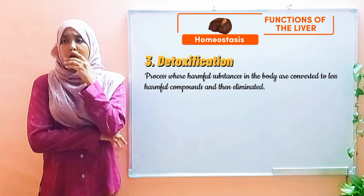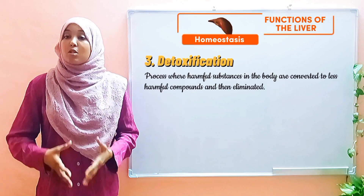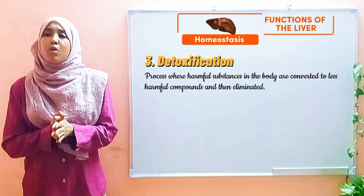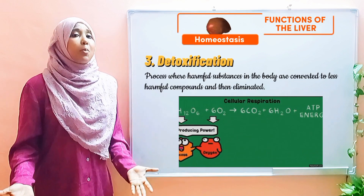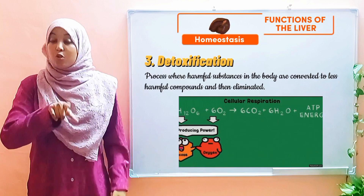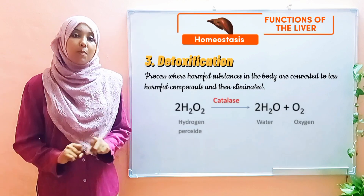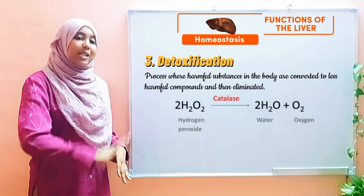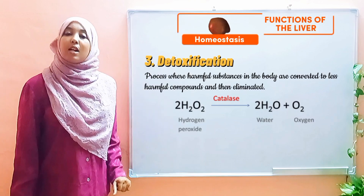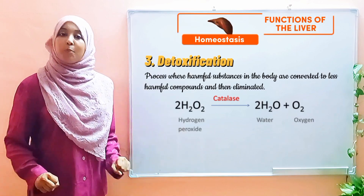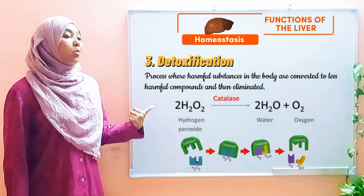Why do we even need to carry out processes such as these? The reason is because these processes are very important to our function. Take respiration as an example — we all know how important respiration is. Respiration leads to the production of energy; we cannot survive without it. But did you know that respiration produces a waste product called hydrogen peroxide, which is very toxic? What the liver does is break down hydrogen peroxide into two harmless substances: water and oxygen gas. This reaction is catalyzed by an enzyme known as catalase.